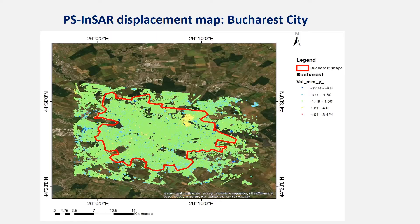This is a displacement map of Bucharest city. The deformation rate in the interval of minus 4 mm to minus 1.5 mm and 1.5 mm to 4 mm marks the transition from stability to instability — subsidence for negative values and uplift for positive ones. The negative deformation rates greater than minus 4 mm indicate areas affected by subsidence, while deformation rates higher than 4 mm indicate uplift. The deformation rate ranges from minus 8 mm maximum subsidence to plus 5.75 mm maximum uplift.